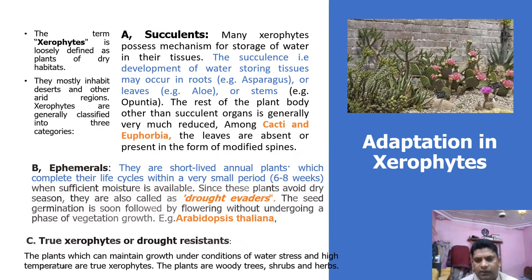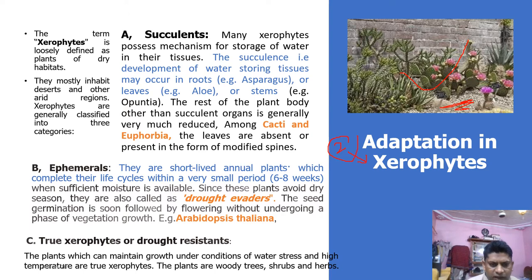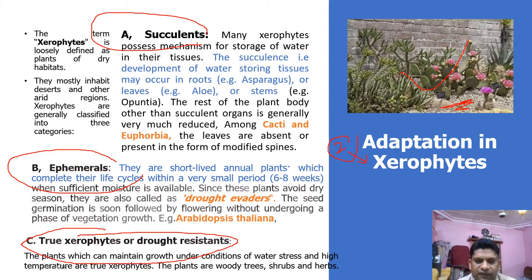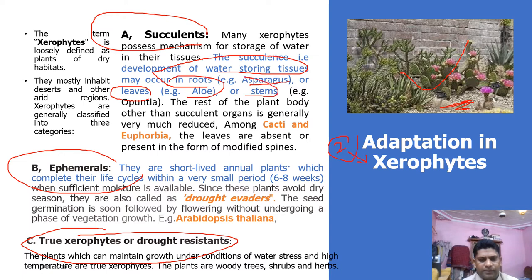The second category is xerophytes, adapted to survive in very short supply of water. They are classified into three types: succulents, ephemerals, and true xerophytes. Succulents possess mechanisms for storage of water — they have water-storing tissue in roots such as Asparagus, in leaves such as Aloe, or in stems such as Opuntia, Cacti, and Euphorbia. Their leaves are modified, and they conserve large amounts of water for a long time. Ephemerals are short-lived annual plants which complete their life cycle within a small period of six to eight weeks when sufficient moisture is available. They avoid the dry season and are known as drought evaders. Their seed germination is followed by flowering without undergoing a vegetative phase — examples include Eragrostis and Thalesia.